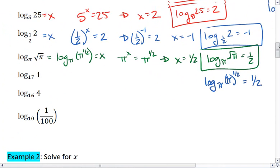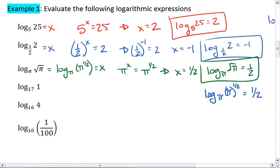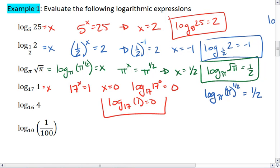Let's look at the rest of these. Log base 17 of 1, which means 17 to the x equals 1. But we know if we want to make a base raised to a power equal to 1, then that exponent has to be 0. So x has to be 0. Or we could look at this as log base 17 of 17 to the 0, which would equal 0. Essentially, either way you end up with log base 17 of 1 equals 0.